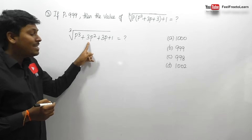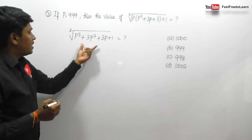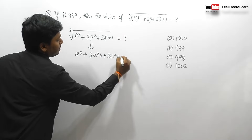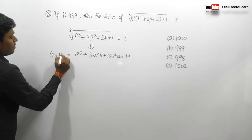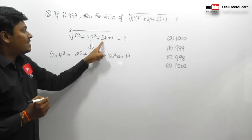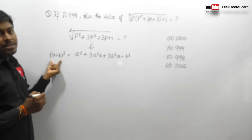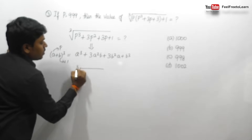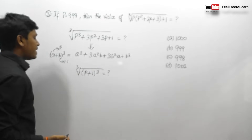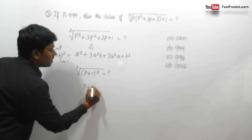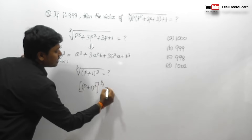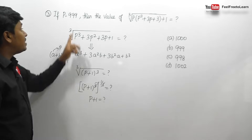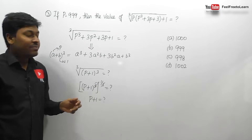The expression p³ + 3p² + 3p + 1 matches the algebraic identity a³ + 3a²b + 3ab² + b³, which equals (a + b)³. Here a equals p and b equals 1. So the expression becomes the cube root of (p+1)³, which simplifies to p plus 1. Since p equals 999, the answer is 999 plus 1 equals 1000, which is option A.